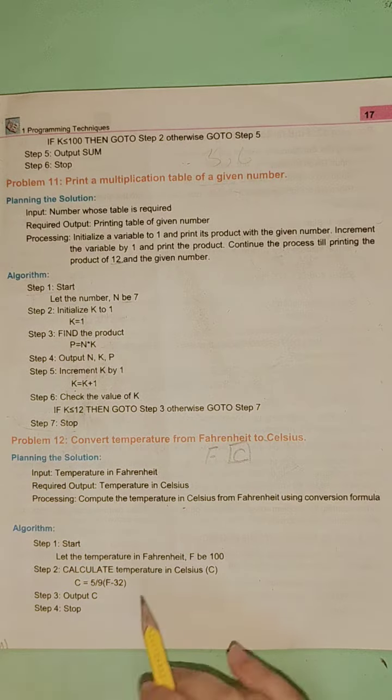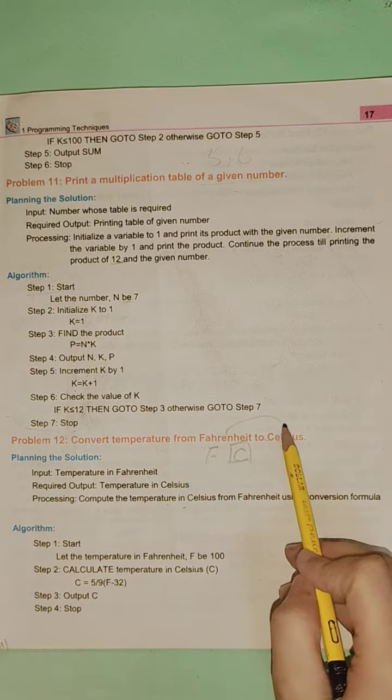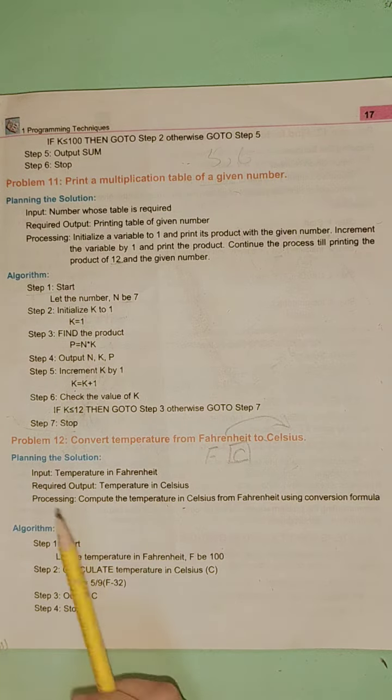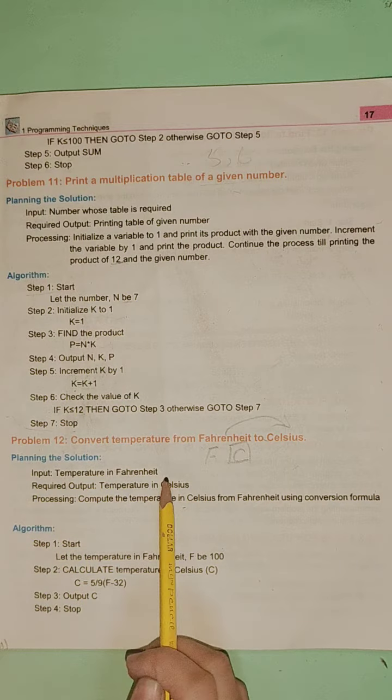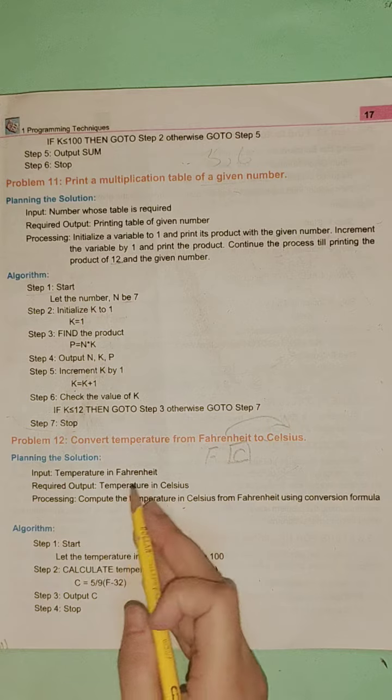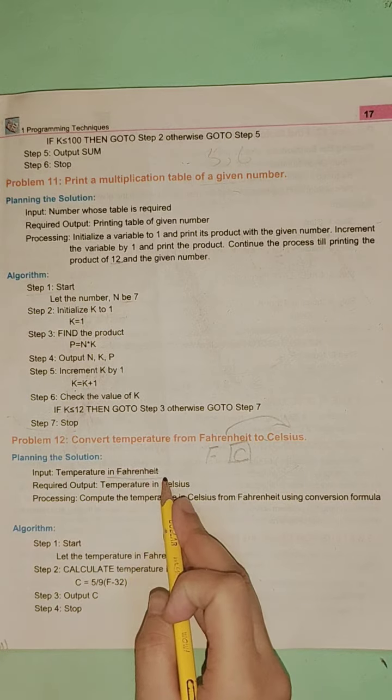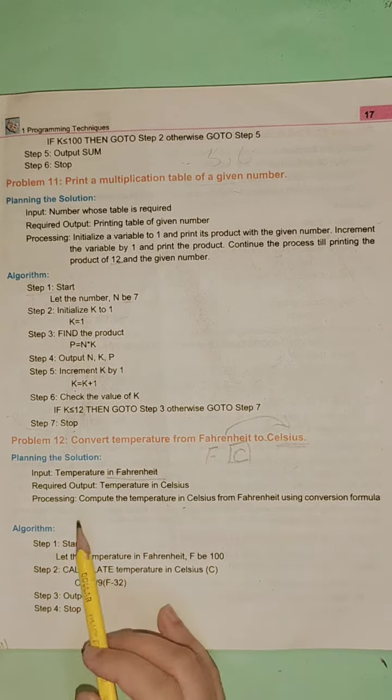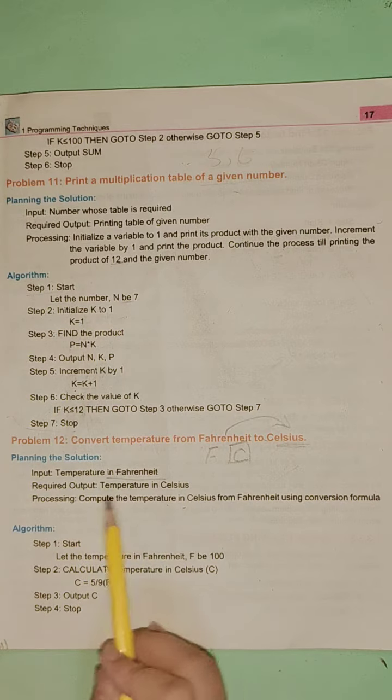What do we have to do? We have to convert Fahrenheit to Celsius. Input is temperature in Fahrenheit. We will enter temperature in Fahrenheit and it will automatically convert to Celsius. Required output is temperature in Celsius.